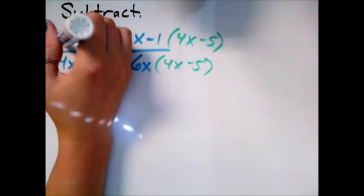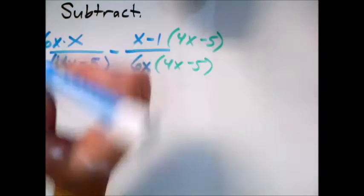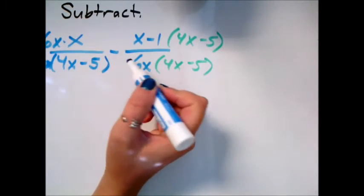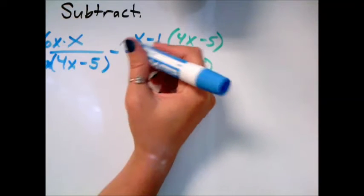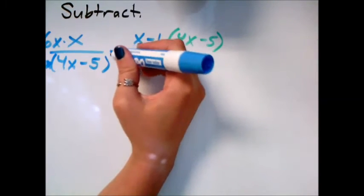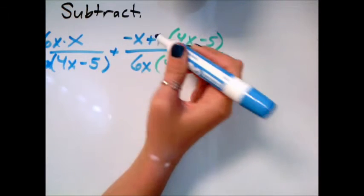Now I'll point out this negative is usually something that gets forgotten about very easily. One thing you can do is either be really careful about your parentheses, or I could just distribute this negative right now because it's saying minus this whole thing. So I'll put minus x plus 1.